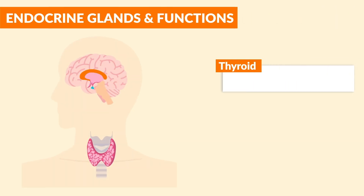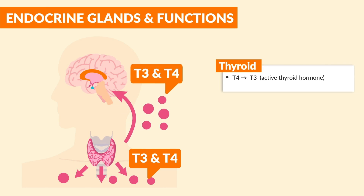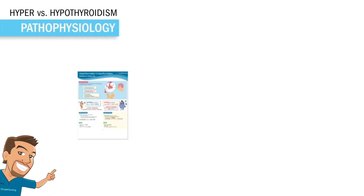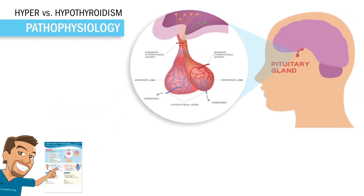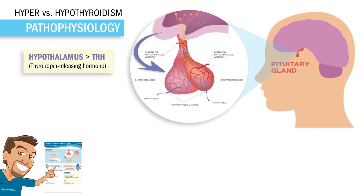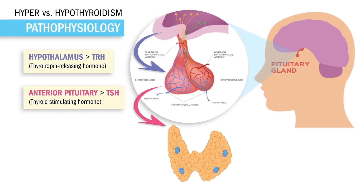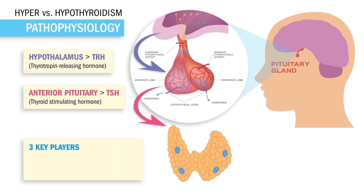Switching gears to the thyroid. The main thing to know is that T4 converts into T3, the active thyroid hormone, with the help of TSH. Just like all endocrine hormones, it's a big game of telephone: the hypothalamus releases TRH, which tells the anterior pituitary to release TSH, and TSH stimulates the thyroid. The thyroid then releases T3 and T4 — our active thyroid hormones — and also calcitonin, which puts a ton of calcium into the bone. Memory trick: calcitonin, a ton in the bone.